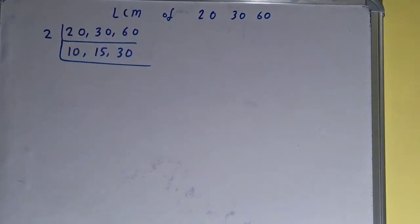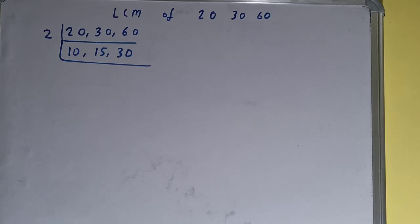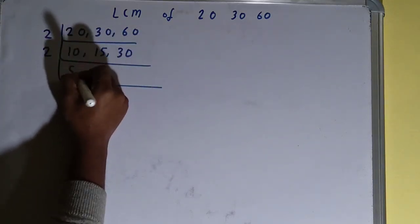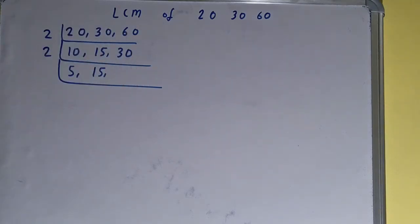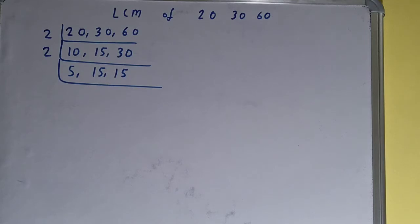Now again, if we check is any of the number divisible by 2, then the first and the last number is divisible by 2. So we'll divide and we'll have 5, this will remain as 15 because it is not divisible, and this will become 15.